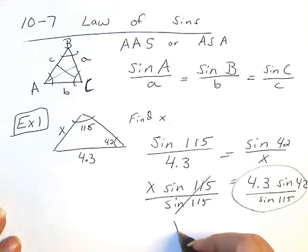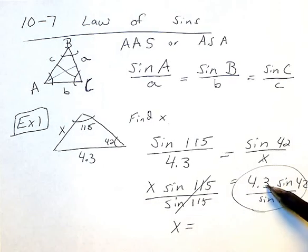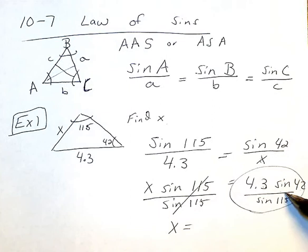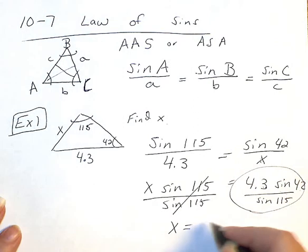So you get X equals, and I'll wait a minute. You can throw it into your calculator. So put 4.3 sine of 42 divided by sine of 115. You should get 3.2.